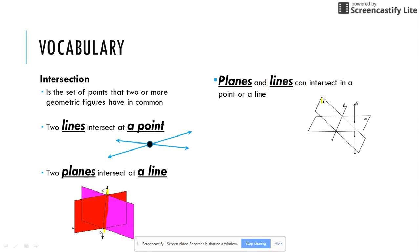Planes and lines can intersect at a point or a line, it depends on the picture. Here, we have two planes, plane M and plane N, intersecting at line L. However, line H can cut through plane N and intersect at a point. It really depends on the picture.